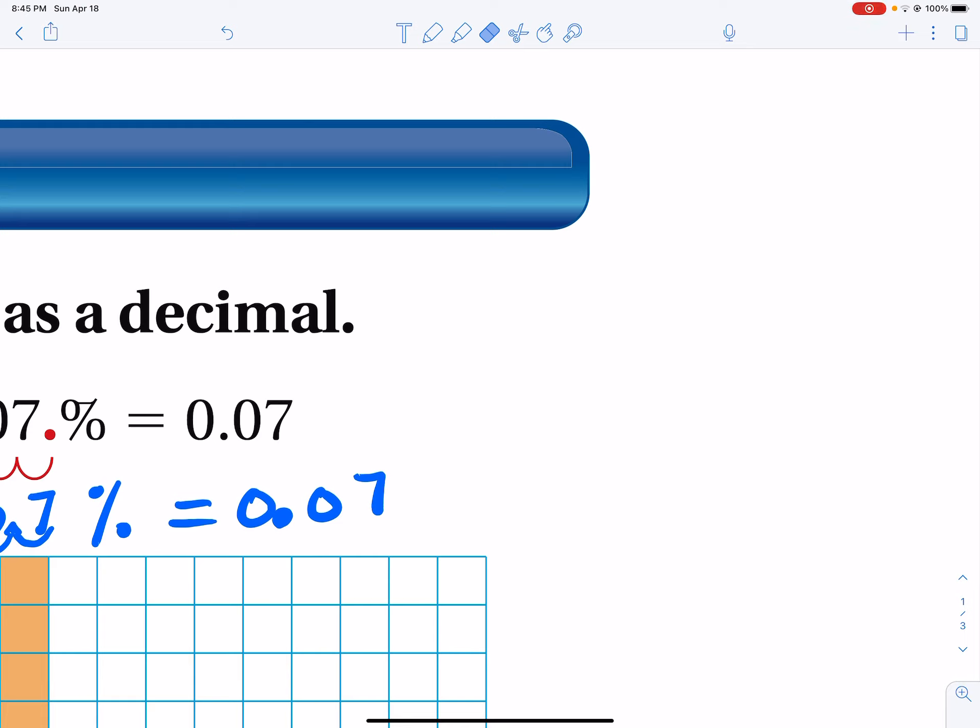Like, for instance, let's try 9 percent. 9 percent, it's the same thing as 9.0 percent. You've got to move this decimal to the left two spots. So it would be 0.09. See that? That empty spot here represents a zero. Yeah. So that's how you do it.